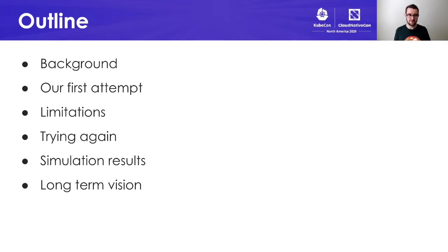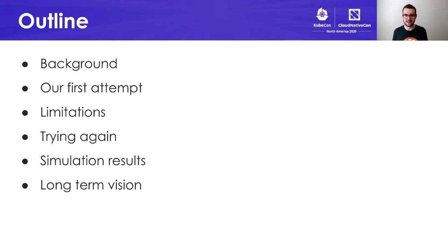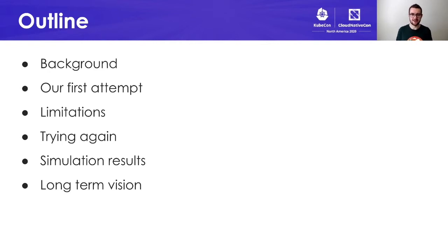Before we get into that, I want to provide just a brief outline of how I want to structure today's talk. First, I'm going to go through a little bit of background as far as how we got to where we are, and then cover our first attempt at topology aware routing and some of the limitations associated with that. Then I want to explain our second attempt and what we're trying to do differently this time, as well as how that actually performs in real life with the simulator simulating millions of different inputs and scenarios. And finally, I want to provide a long term vision for where we see this going in the months and years to come.